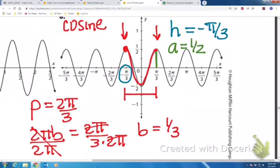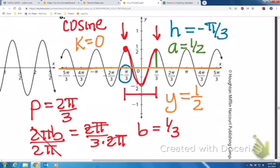And if you notice, the graph has the midline here at 0. That would make k equal to 0. Therefore, our final equation would be y equals 1 half cosine 1 third times x plus pi over 3.